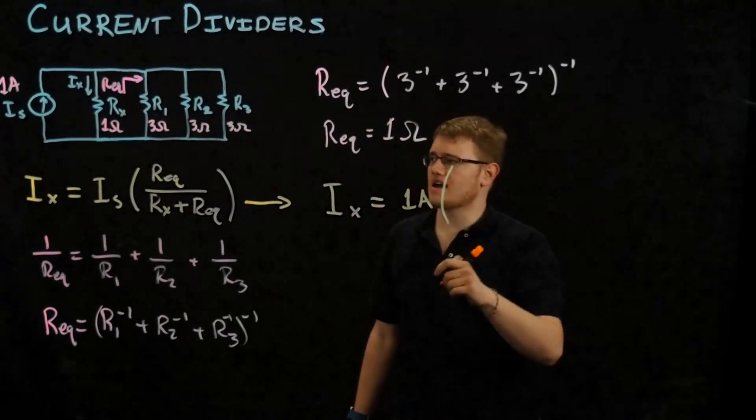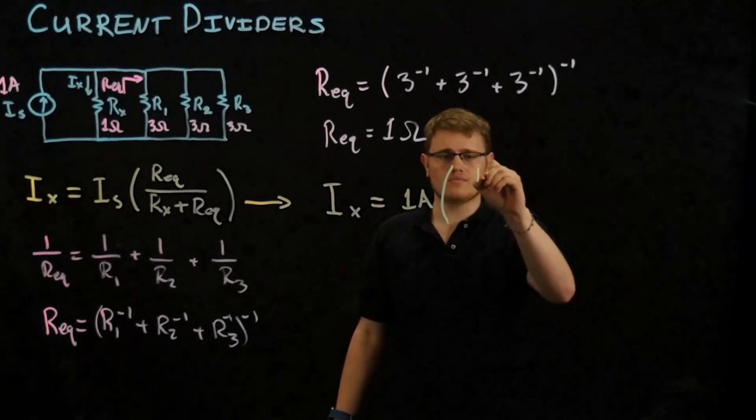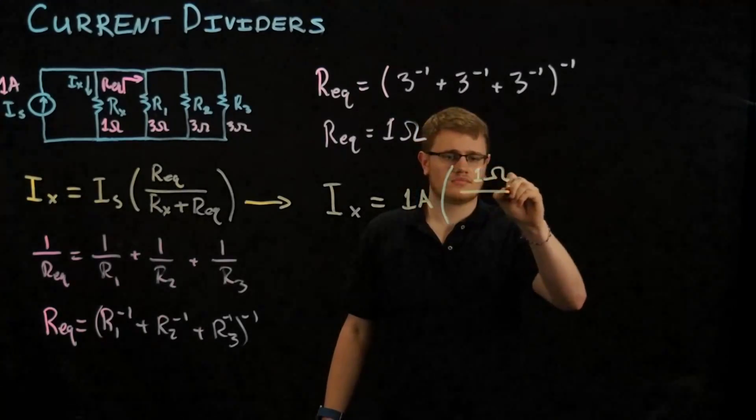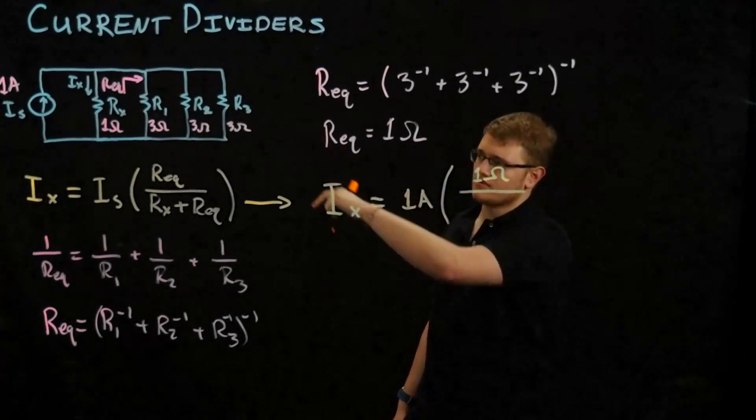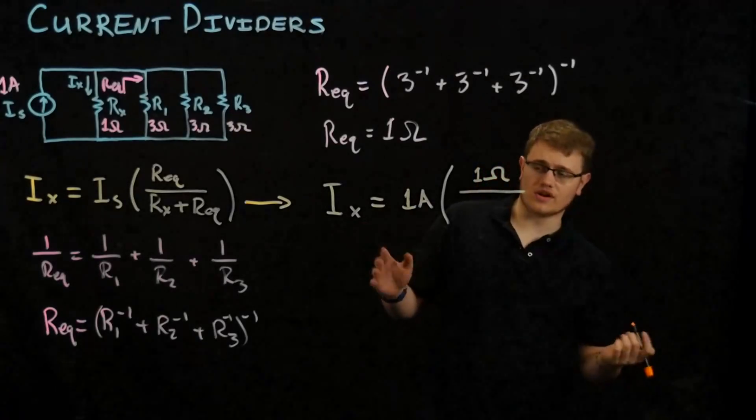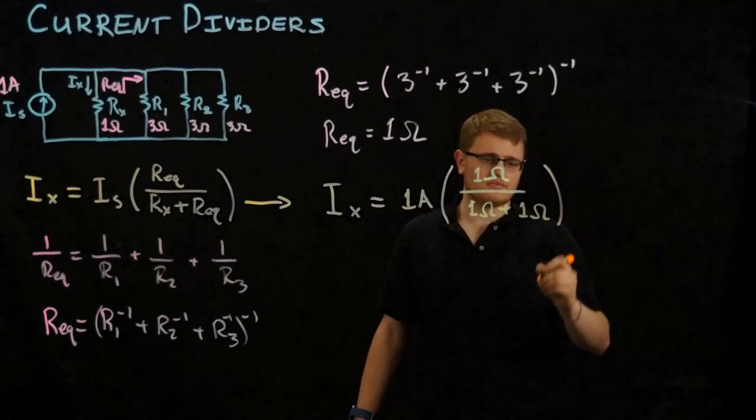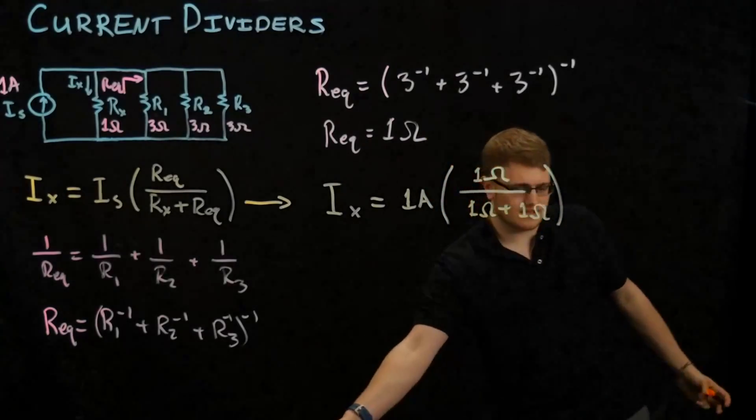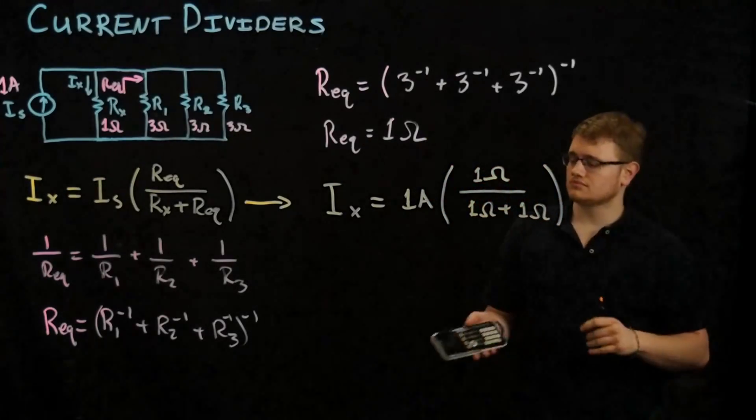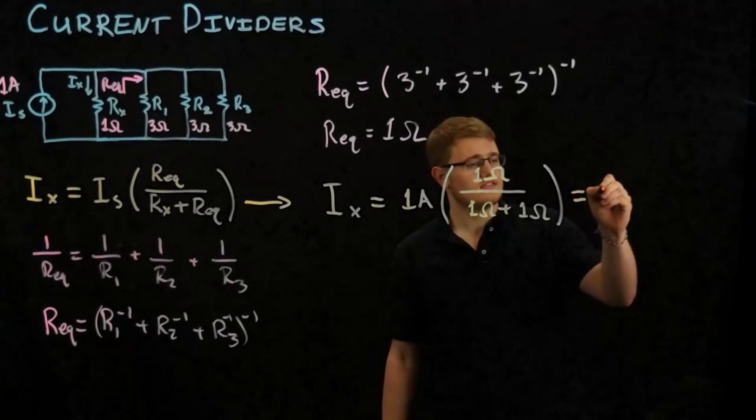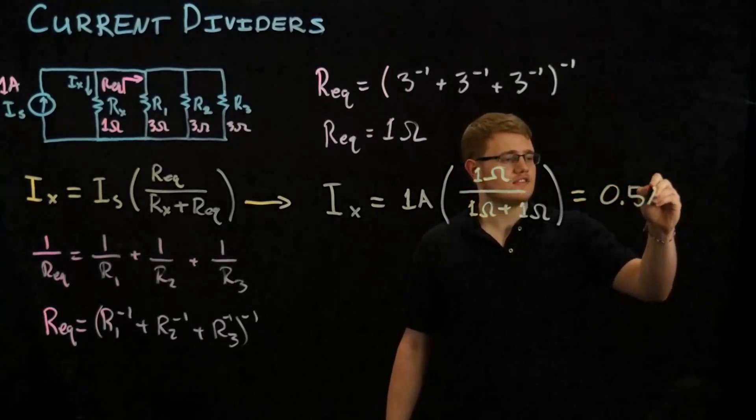We're going to multiply that by our equivalent, which we found is one ohm, over Rx, which the problem gave us as one ohm, plus our equivalent again, which is one ohm. Now we do that on our calculator, and we get 0.5 amps.